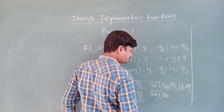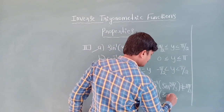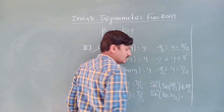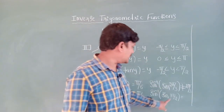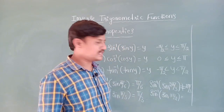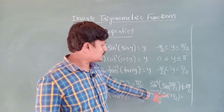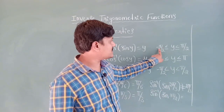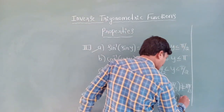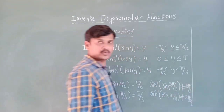sin⁻¹(sin 3π/2): 3π/2 = 270 degrees. 270 degrees does not lie between minus 90 and plus 90, so answer is not equal to 3π/2.